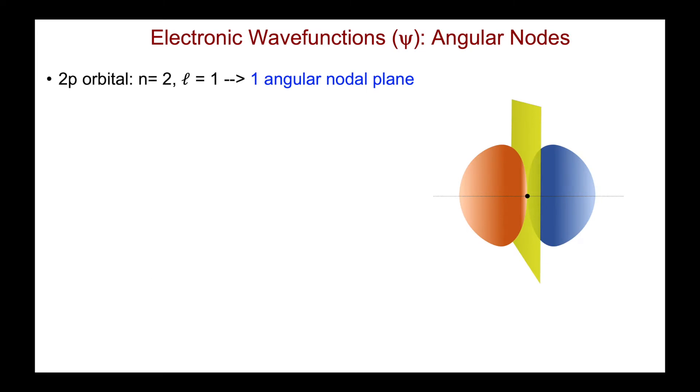Let's take a look at the angular nodes in a 2p orbital, where there is one angular nodal plane, shown here in yellow. And across that plane, there is a change in the sign of the wave function, represented here by a change in the color of my boundary surface diagram.